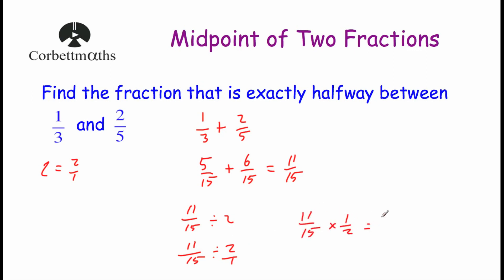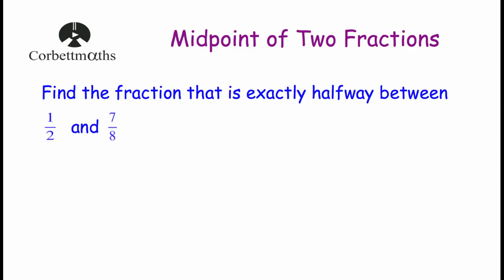So that's eleven over fifteen multiplied by one over two. Eleven times one is eleven, and fifteen times two is thirty. So the fraction exactly halfway between one-third and two-fifths is eleven-thirtieths. Let's have a look at another question.